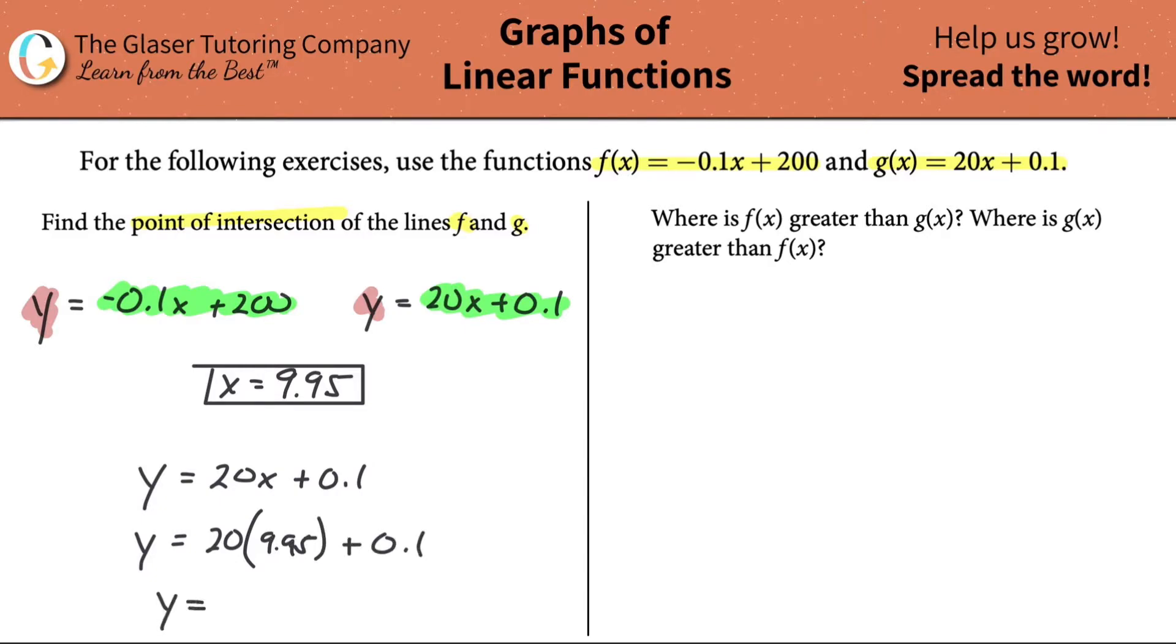Plug in now that x value, so 9.95 plus 0.1. And probably when I do this calculation, I'm going to use the exact value that I found in the calculator, which is about 9.945273632. Just take that then and multiply it by 20 and add 0.1 to it. And it's going to come out to be very close to 199. And voila, these are the two points. So the coordinates are going to be about 9.95 comma 199.